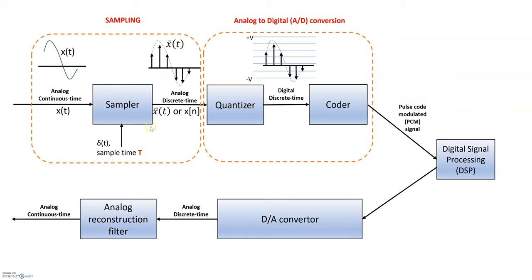In this video I'm going to discuss the next step in the process: converting the analog signal to a digital signal. As a refresher, an analog signal can take any amplitude values. The digital signal is different because the amplitude values cannot be arbitrary — they are specific numbers that we define.